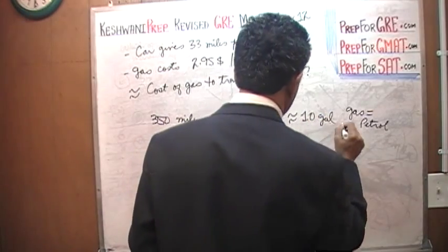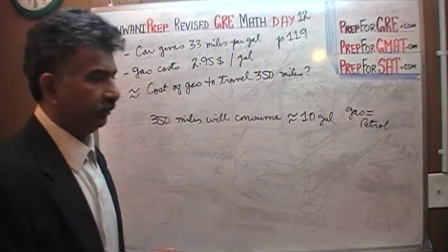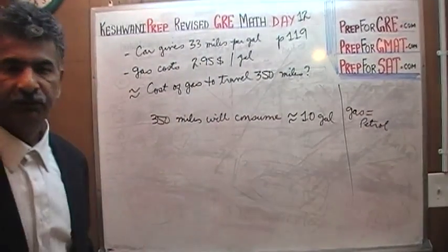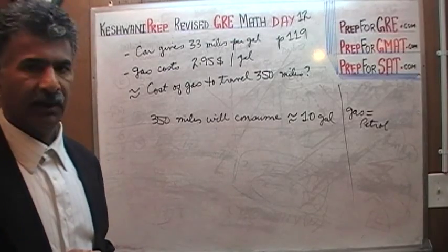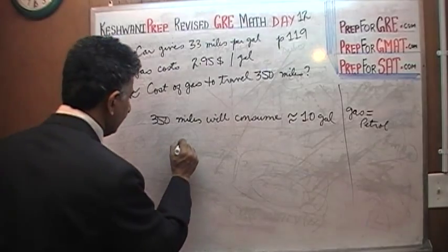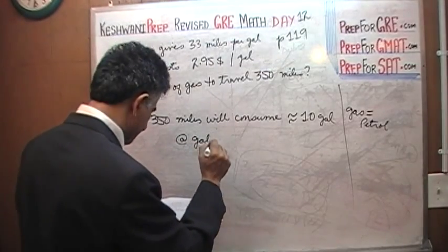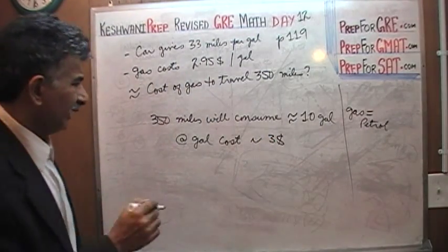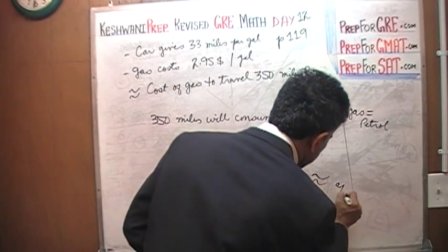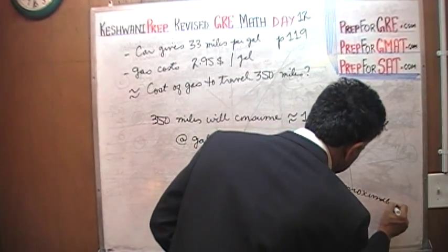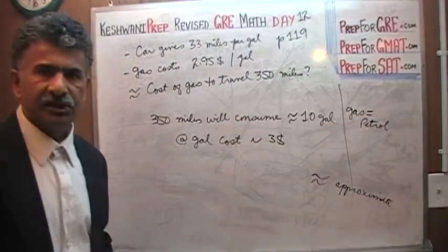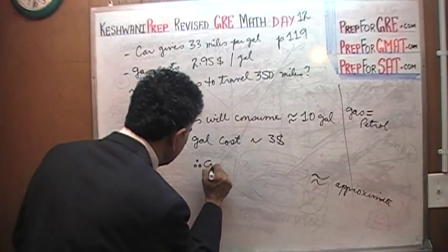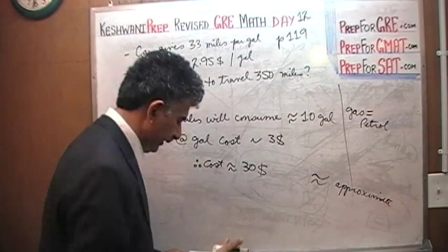It's about 30 miles per gallon. It will consume approximately 10 gallons, because 10 times 33 is 330. So it is about 10.5 gallons — something like that, about 10 gallons. And we know that each gallon costs about three dollars — this is approximate. So each gallon costs three dollars, we're going to consume approximately ten gallons, so the cost is therefore approximately thirty dollars.